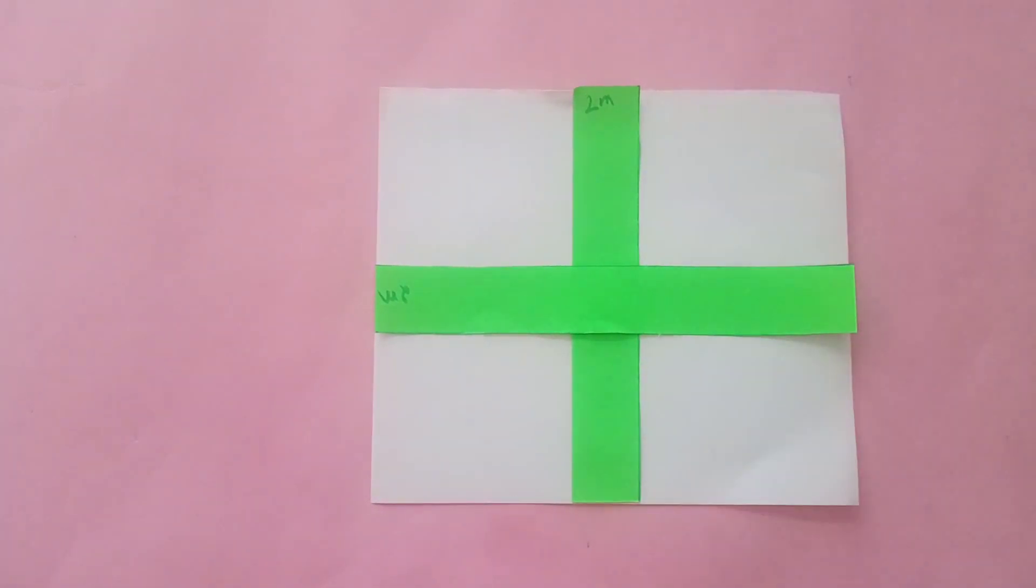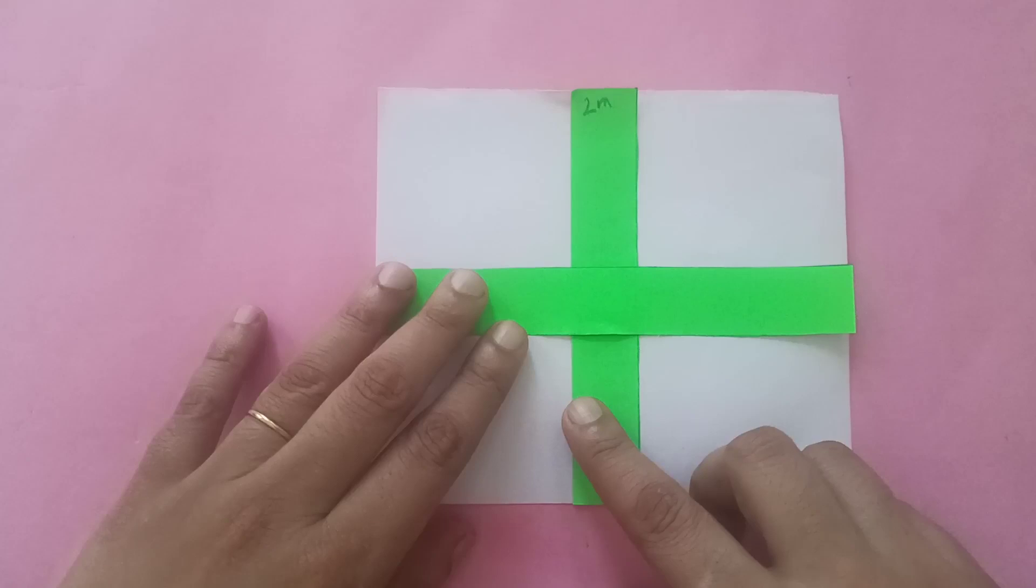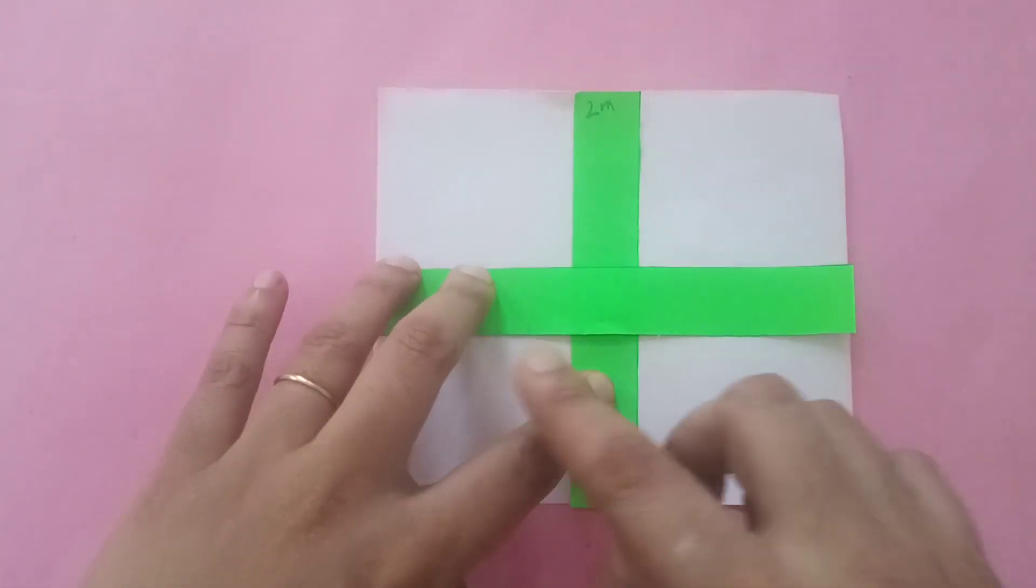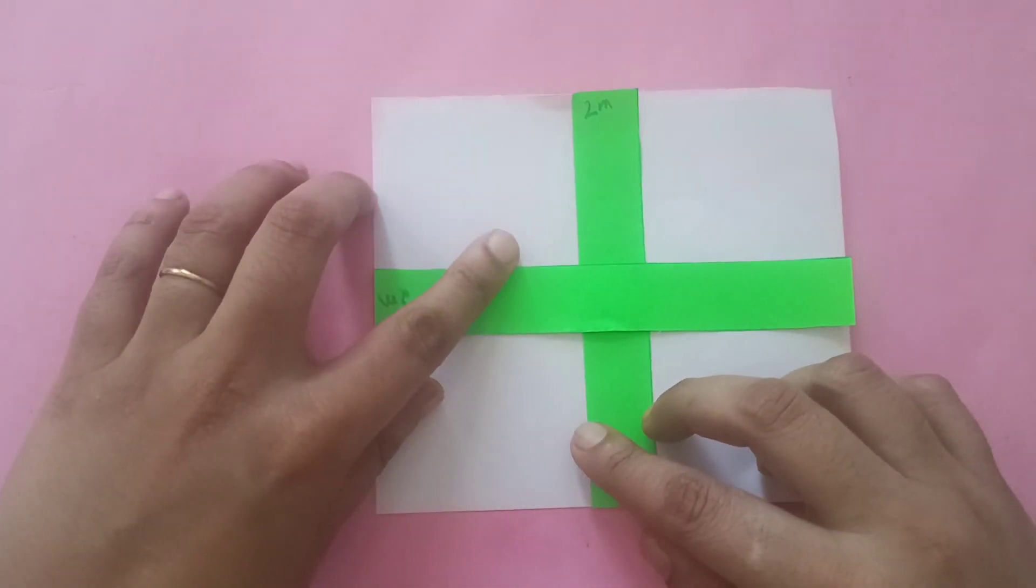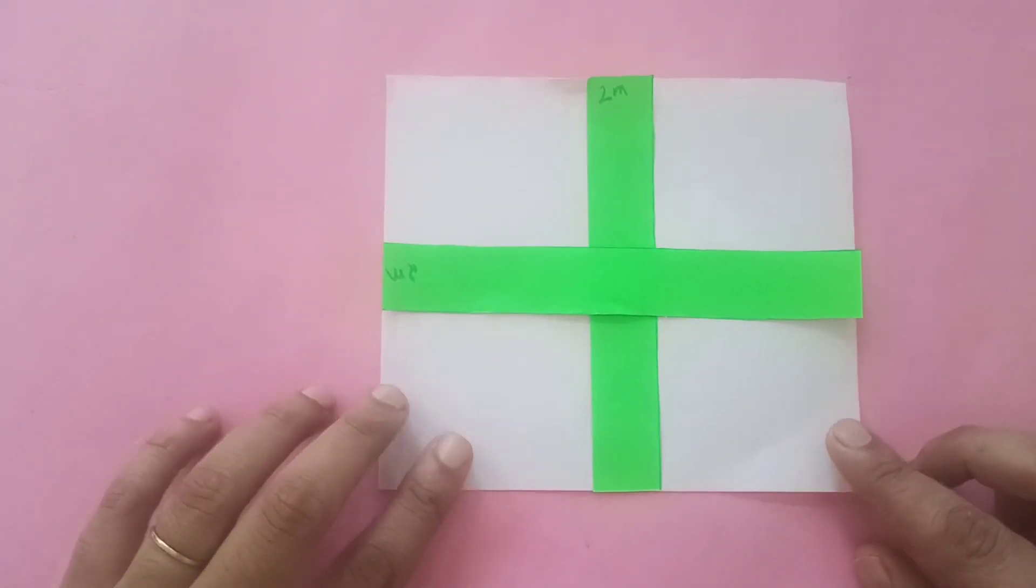They run through the center of the field and they are parallel to one of the sides, you can see they are parallel to one of the sides. So this is what the question is asking us to find out - the area of the paths.